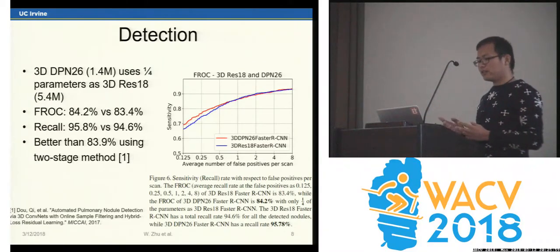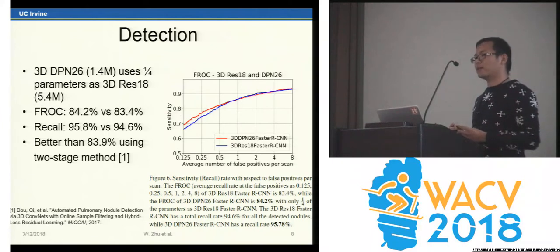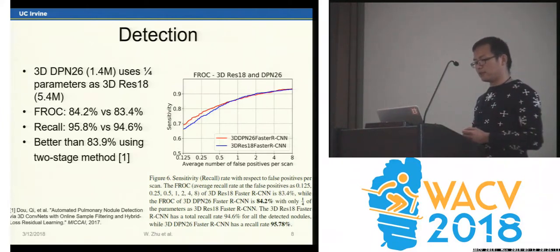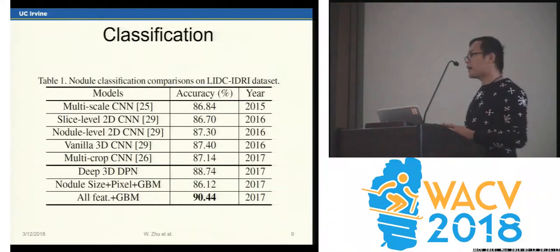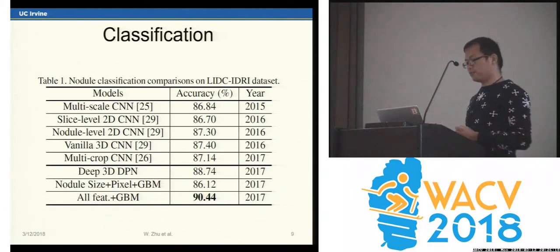The 3D DPN26 uses only one-fourth of the parameters of 3D ResNet, but achieves 1% improvement over ResNet, which is better than the two-stage method. The classification framework achieves 3% improvement over the previous state-of-the-art method.